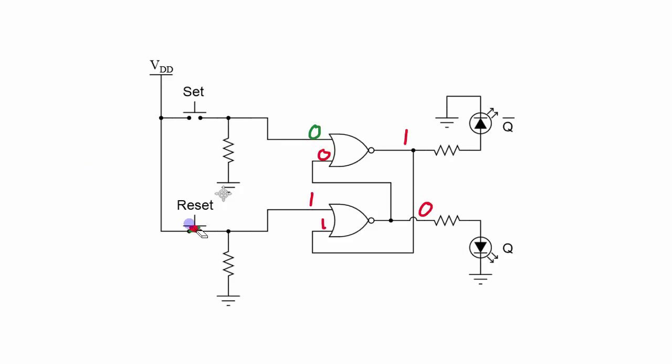Then the reset button gets released. The input to the NOR gate here becomes a 0. 0 NORD with 1 is still 0. This 0 is feeding into this NOR gate, 0 NORD with 0 is still 1, so the system doesn't change state even when the reset button gets released.